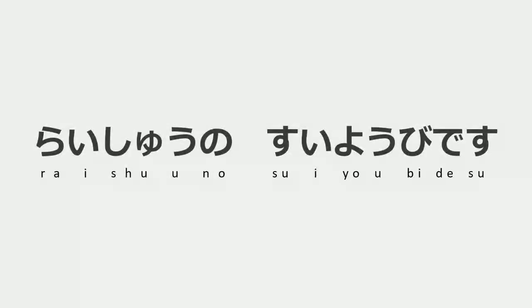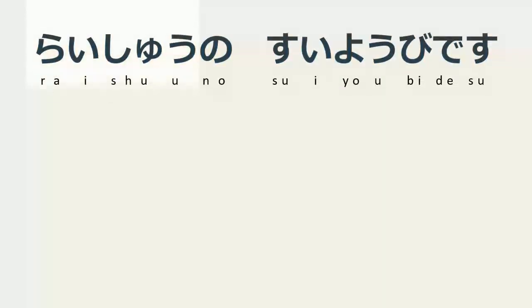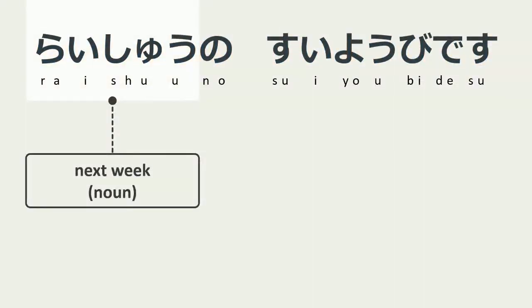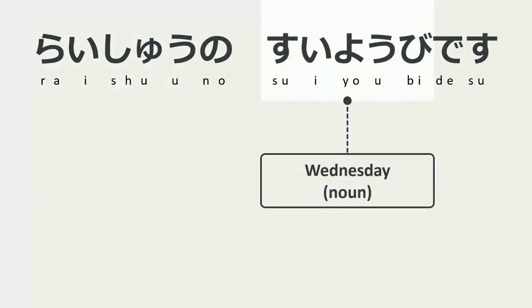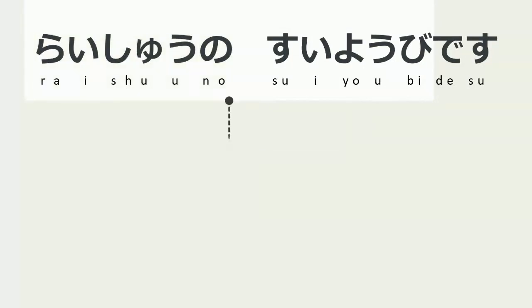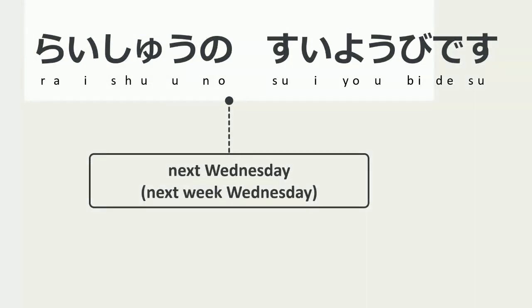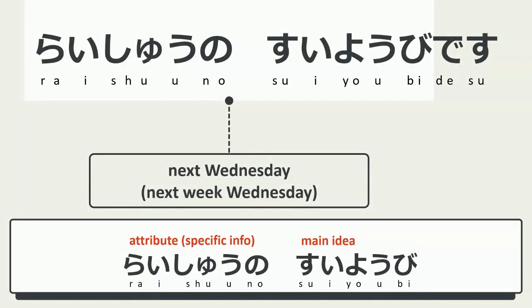The next sentence is 来週の水曜日です。 来週 means next week. In English, 'next week' is two words, but in Japanese 来週 is one word for next week. 水曜日 means Wednesday. With the の particle, 来週の水曜日 means next Wednesday. 水曜日, Wednesday, is the main idea. 来週 is the attribute of the main idea — we are not talking about any Wednesday, we are talking about next Wednesday.